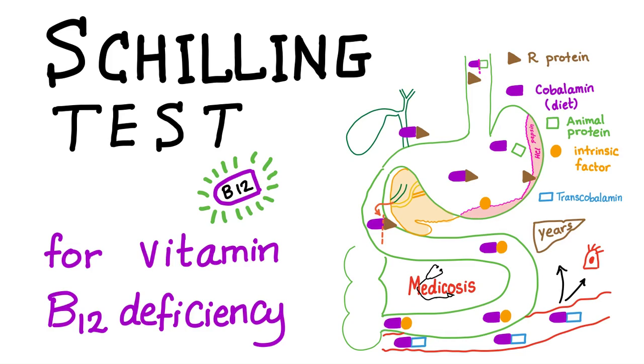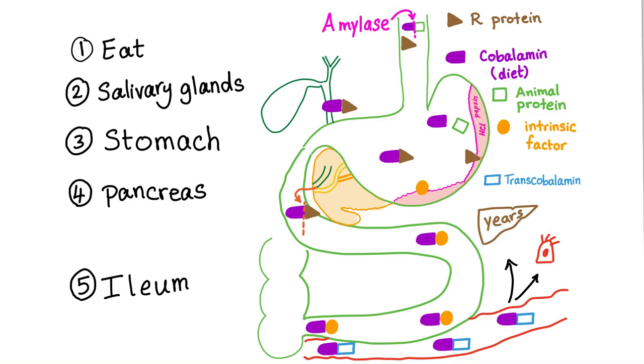In brief, Schilling test is giving the patient radioactive B12 and then measuring the B12 in the urine to see if this patient is absorbing B12 or not. So let's get started.